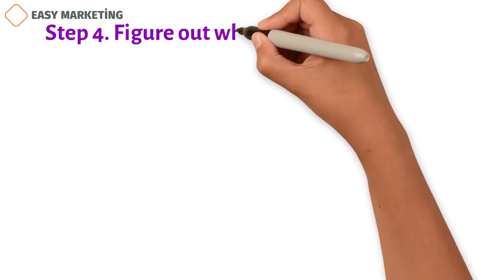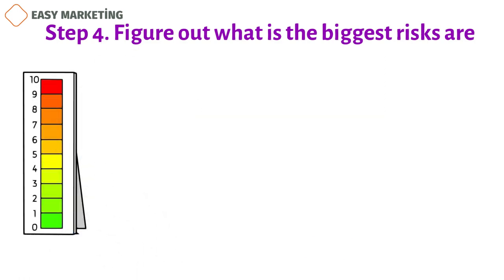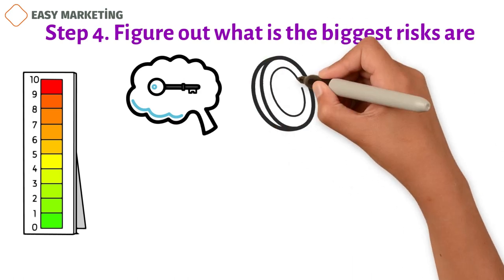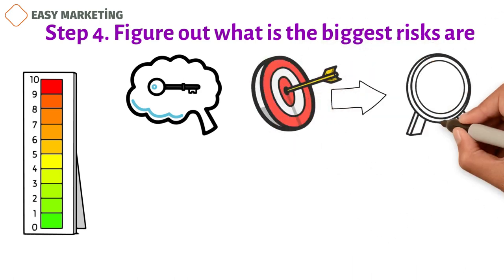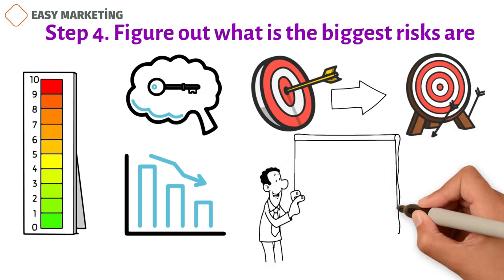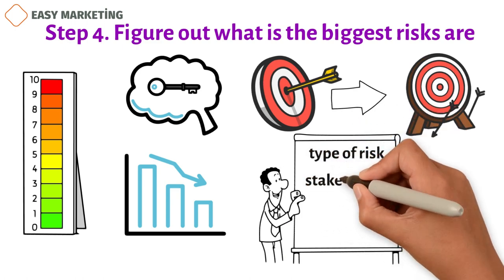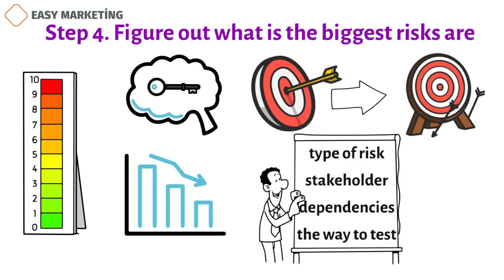Step 4. Figure out what the biggest risks are. Outline and rank the risks of the business model from greatest to least so that you can check key assumptions. The goal of this exercise is to find possible bottlenecks and failure points ahead of time. By doing this, you lower the chances of failing and losing a lot of money before you have a finished product. Vlaskovits says that the risks should be put in a table with the type of risk, the stakeholder who should test it, any dependencies, and the way to test it.